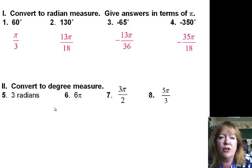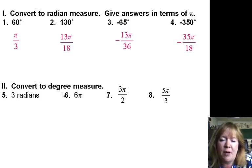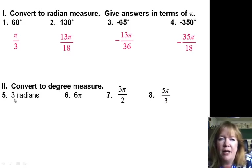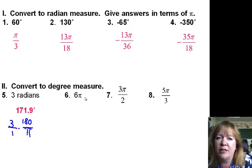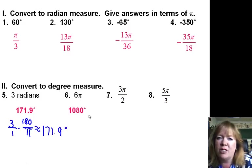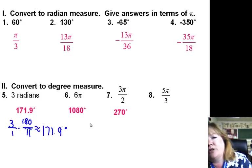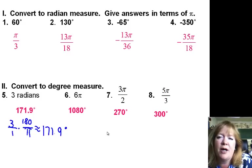Number 5 says convert to degree measure — this is going in reverse. This is where you multiply by 180 over pi instead of pi over 180. When it says 3 radians, people will get this one wrong on the test. That doesn't say 3 pi radians; it's just plain old 3 radians. So you'll get 171.9 degrees — you do 3 over 1 times 180 over pi, which gives you 540 divided by pi, which ends up to be 171.9 degrees. When you have these with the pi in them, the quick and easy way is to just replace pi with 180 degrees. So 6 pi would be 6 times 180, which is 1080 degrees. The next one is 270 degrees, and then 300 degrees — just replace pi with 180.